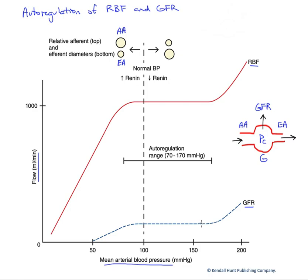GFR is essential to maintaining the production of urine. We have to produce a very large filtrate, and then we modify that through reabsorption and secretion to generate the urine. GFR — we have a schematic of our afferent arteriole (blood flow in), our efferent arteriole (blood flow out), and the ball in the center being the glomerulus, G for glomerulus. PC is the capillary hydrostatic pressure that dominates and drives the production of our filtrate.